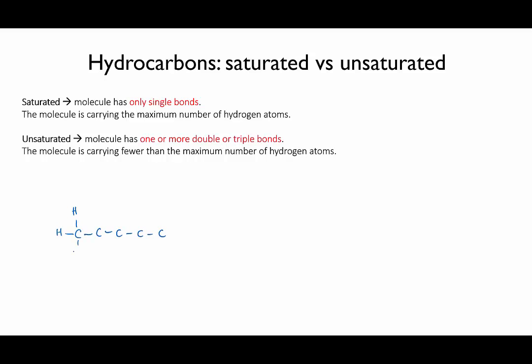Let me draw out pentane, C5H12. Now there is no way to attach more hydrogen atoms to that molecule. All possible bonds have been used, so we say that the molecule is saturated with hydrogen.